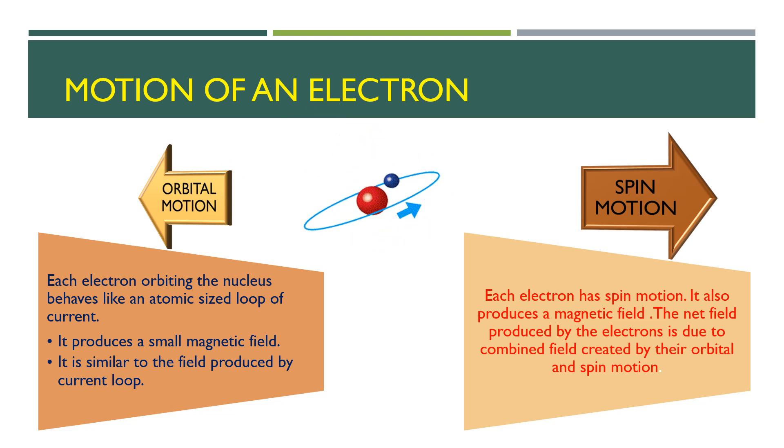This situation is similar to the field which is created by a current loop. Secondly, each electron possesses a spin that also gives rise to a magnetic field.